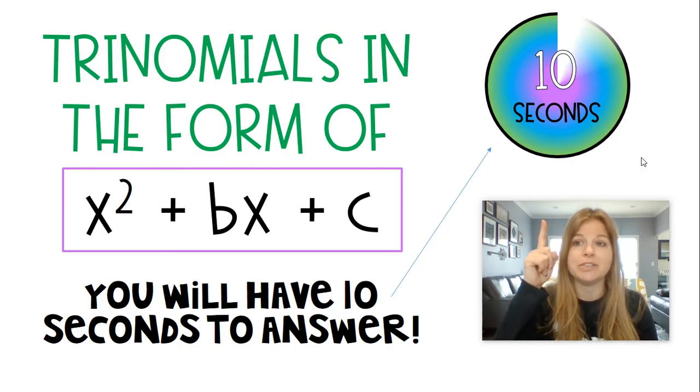So you're just looking at what factor pairs of c add up to b. And you can see above me, there's going to be a timer, that timer is going to go off and you're going to have 10 seconds to answer. And then I'm going to show the results. Are you ready? Let's go.